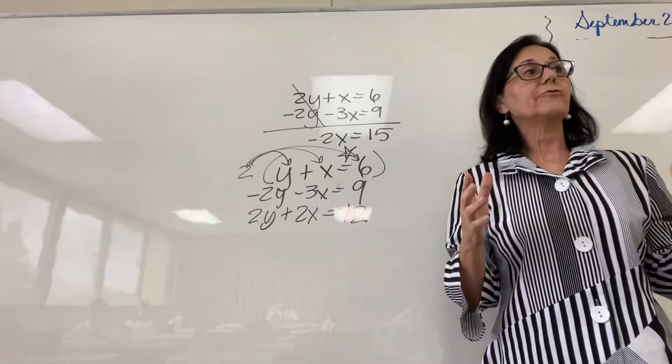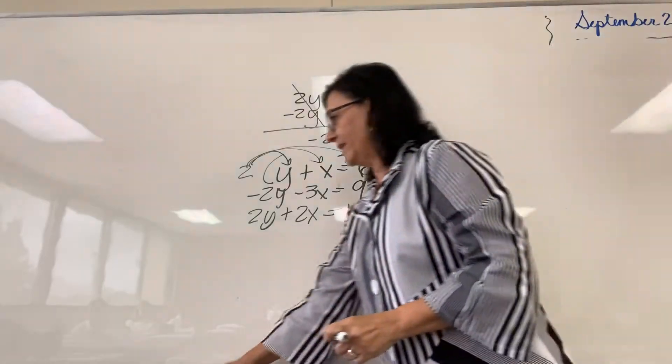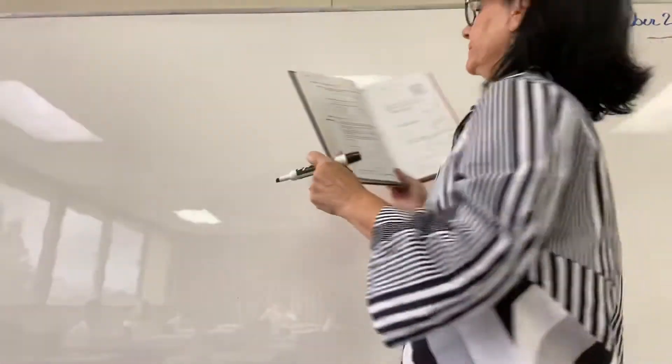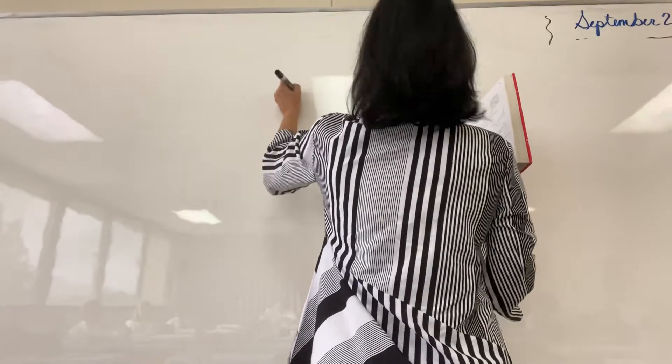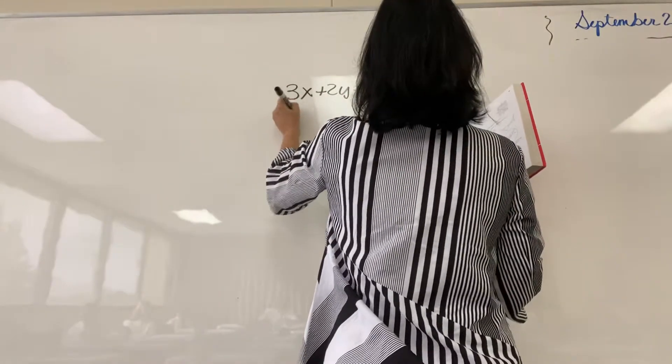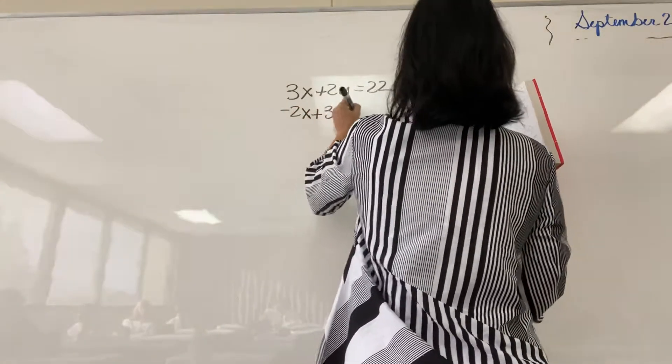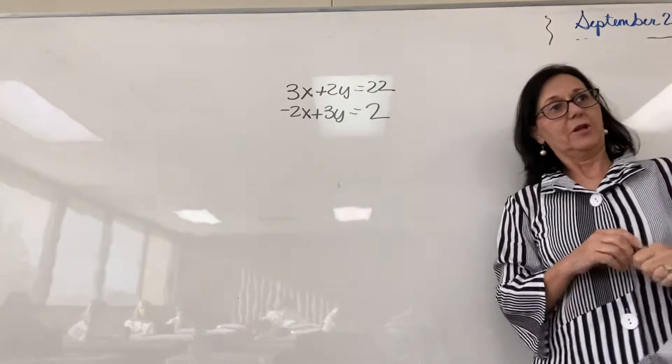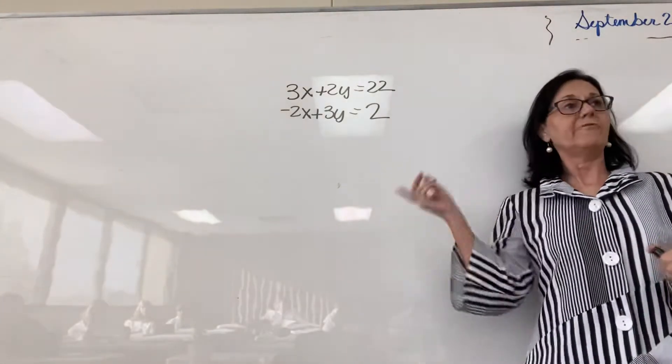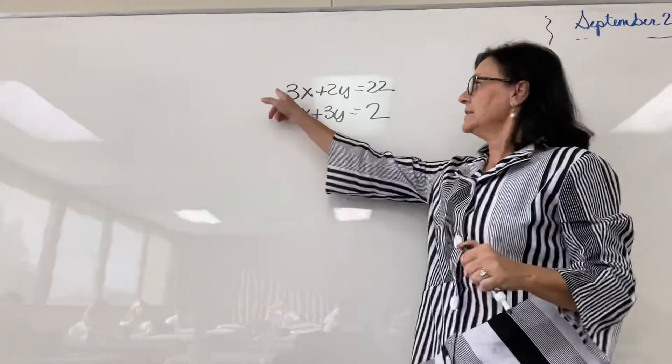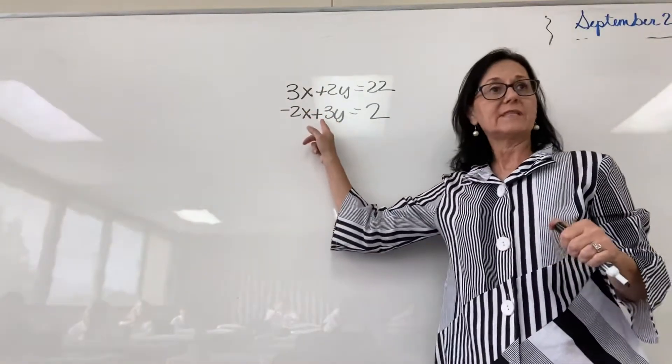We will work through the one example that is given in your textbook on page 80. If 3x plus 2y is equal to 23, negative 2x plus 3y is equal to 2. This is not an example like I showed you. We need the coefficients of one of the variables to be opposites. If I look, these x's have opposite signs, the y's have the same sign.